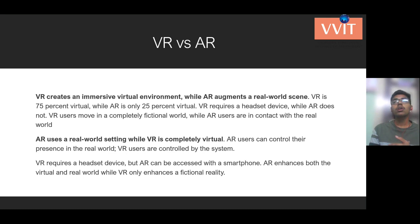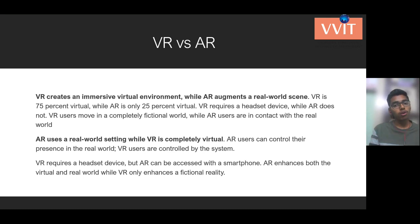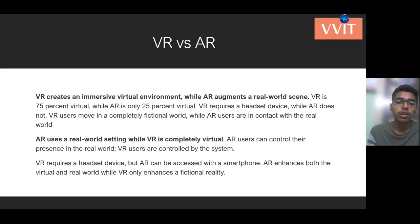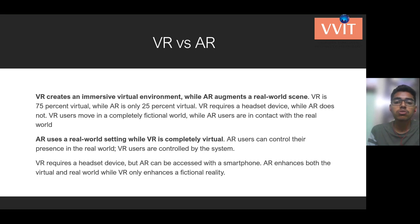With AR, the user maintains a connection between the real world and the virtual world, and both work simultaneously. AR uses a real-world setting while VR is completely virtual and computer-based. AR users can control their presence in the real world, while VR users are controlled by the system. VR requires a headset device, but AR can work with a smartphone. AR enhances both the virtual and real world, while VR enhances only fictional reality. In augmented reality, the user is provided with additional computer-generated information layered over real-life data, enhancing their perception of reality — for example, pointing your phone at an unknown building to see its information and description.